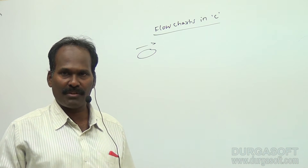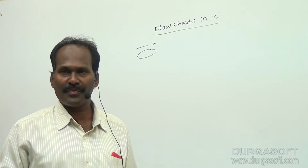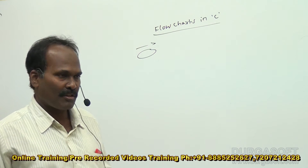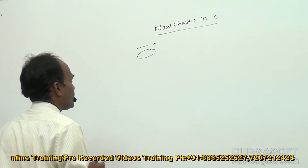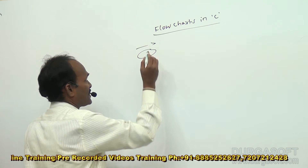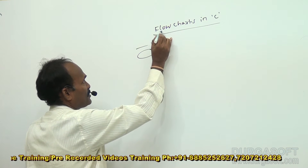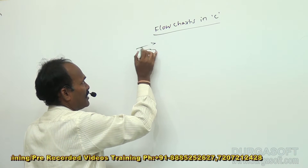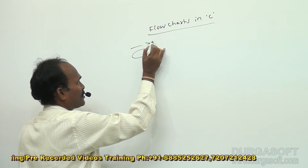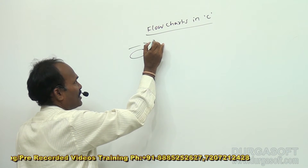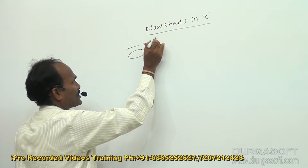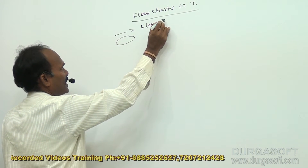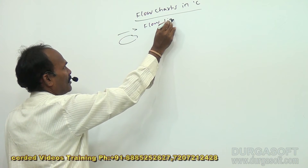For representing the flow of execution, we are going to make use of many symbols. The first symbol to be used in a flowchart is this arrow mark. This is going to indicate the flow of execution. This is called a flow line.